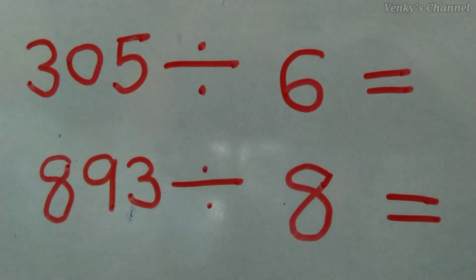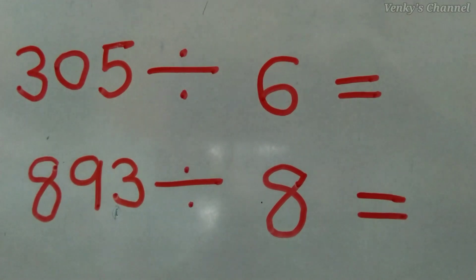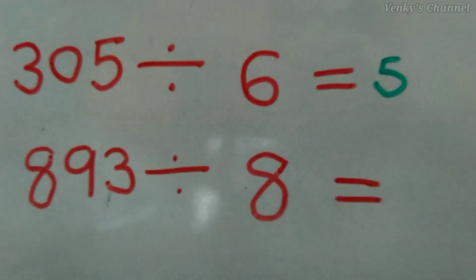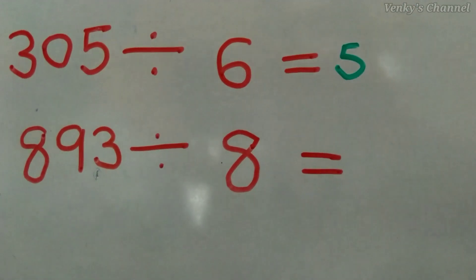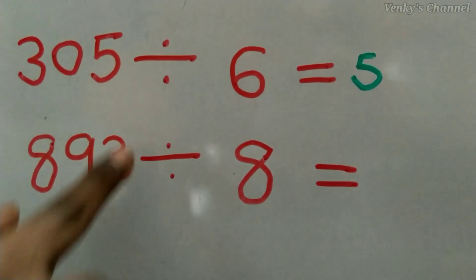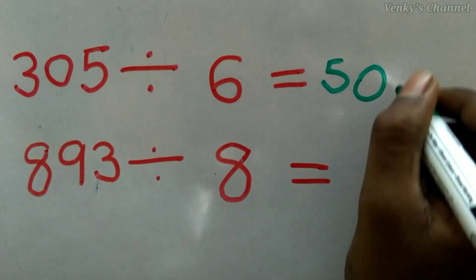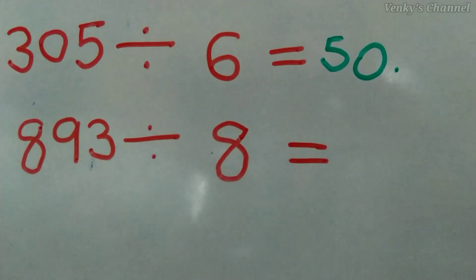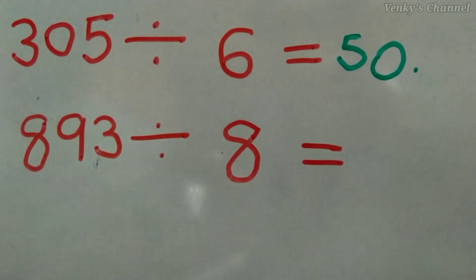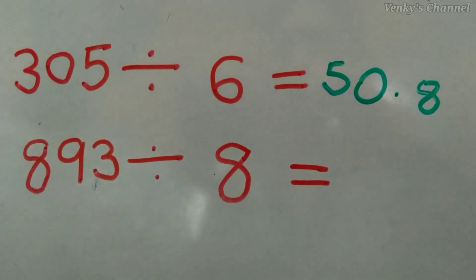Now let's do 305 ÷ 6. The first digit is 3, which is less than 6, so we cannot use it. Including the next digit it becomes 30, which is greater than 6. 6 × 5 = 30, no remainder. Now 5 is less than 6, so we cannot use it, and there is no other digit after 5, so we write 0 because 6 × 0 = 0, giving remainder 5. Putting a 0 beside 5 makes it 50.